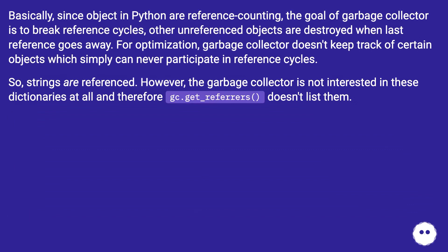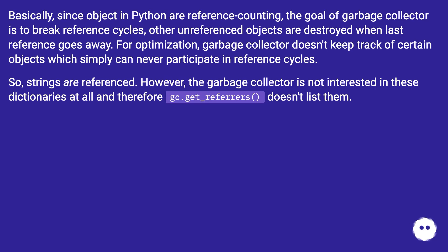Basically, since objects in Python are reference-counted, the goal of the garbage collector is to break reference cycles — other unreferenced objects are destroyed when the last reference goes away. For optimization, the garbage collector doesn't keep track of certain objects which simply can never participate in reference cycles. So strings are referenced. However, the garbage collector is not interested in these dictionaries at all, and therefore gc.get_referrers() doesn't list them.